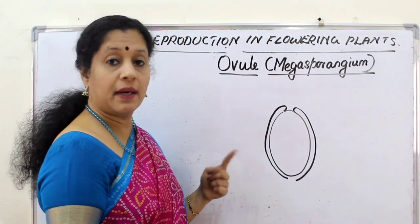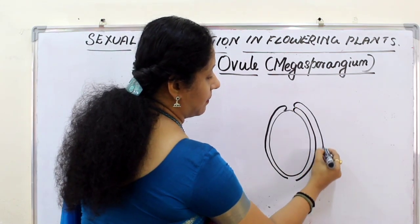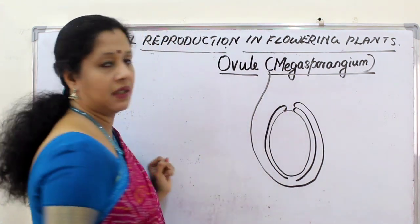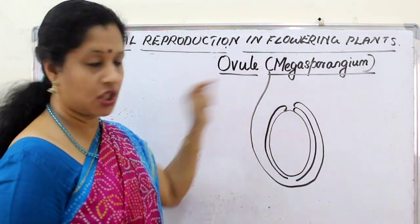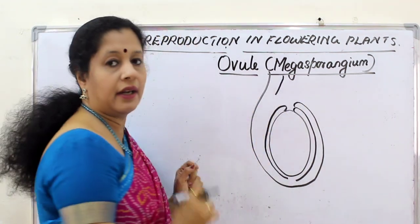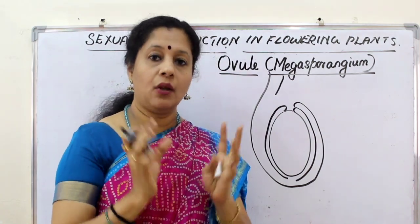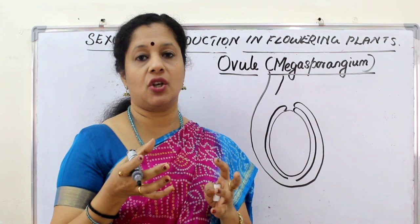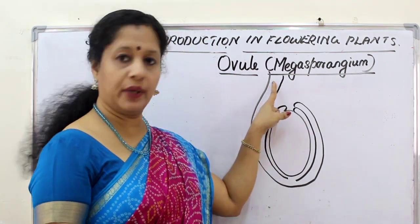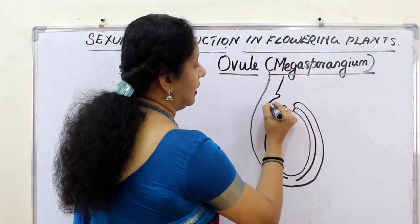There is a first integument and one more called the second or outer integument. The stalk of the ovule is called the funicle. The ovule is kept within the ovary, where there is a cushion-shaped structure called the placenta. The ovule is attached to the placenta with a small stalk called the funicle, and the funicle is attached to the integument.